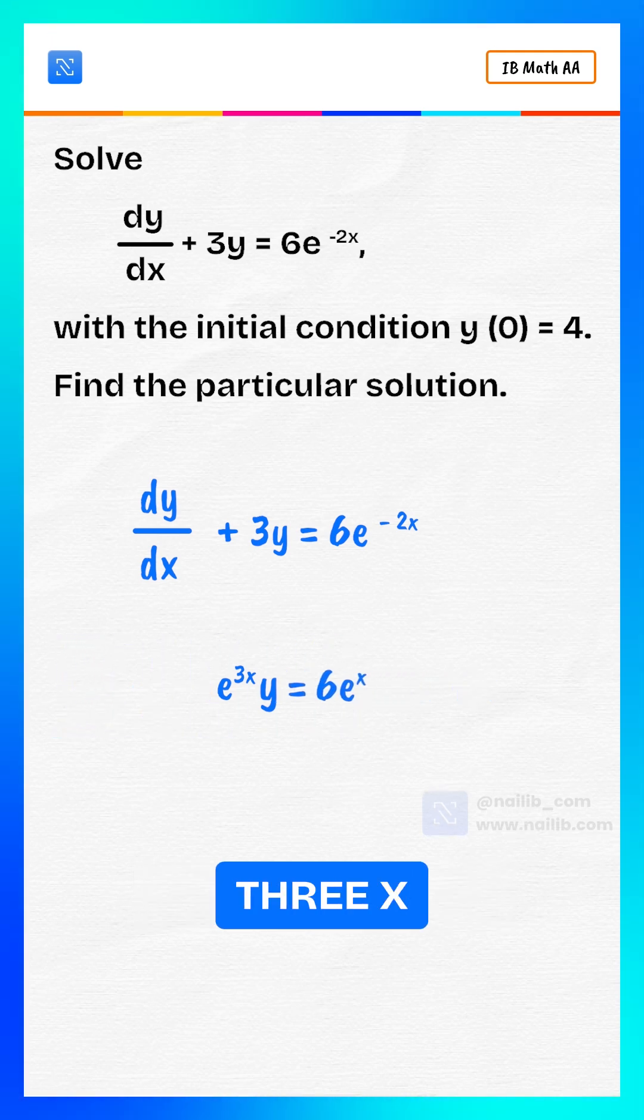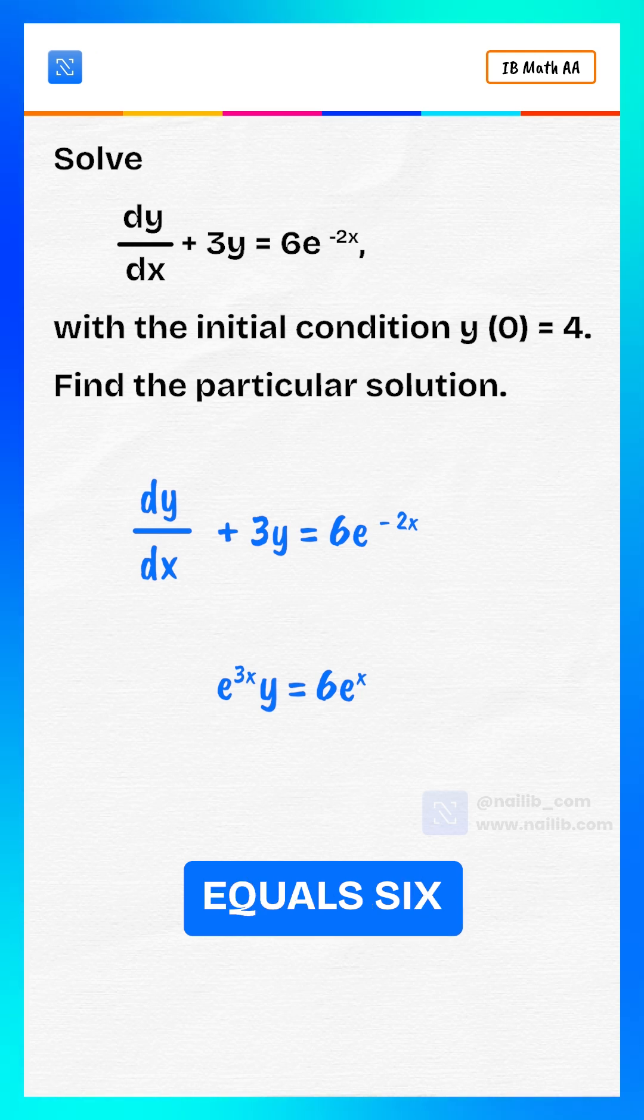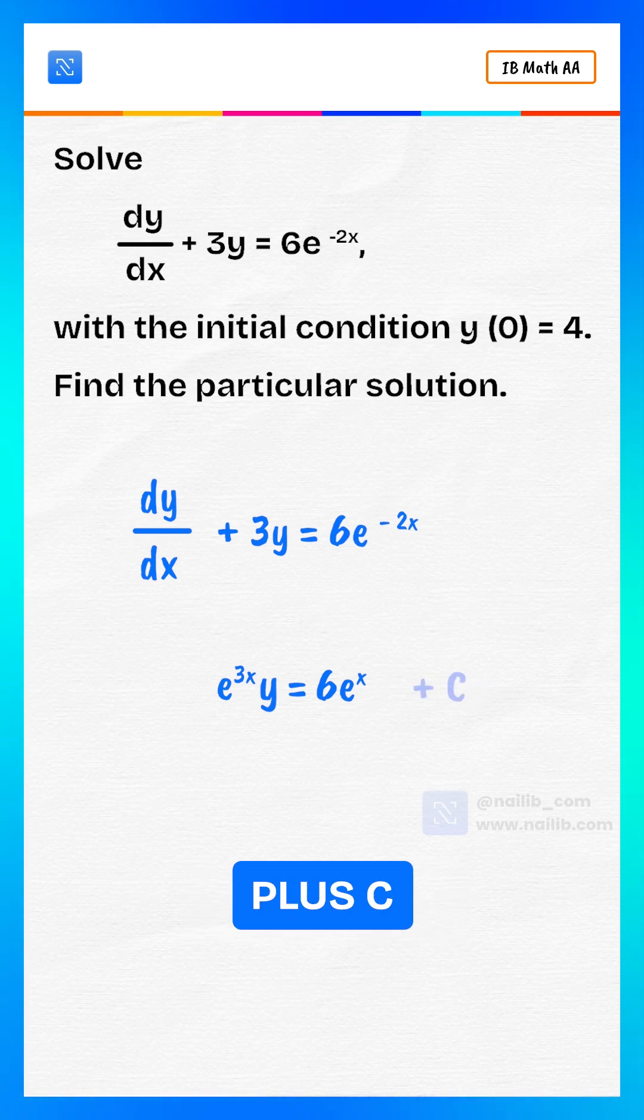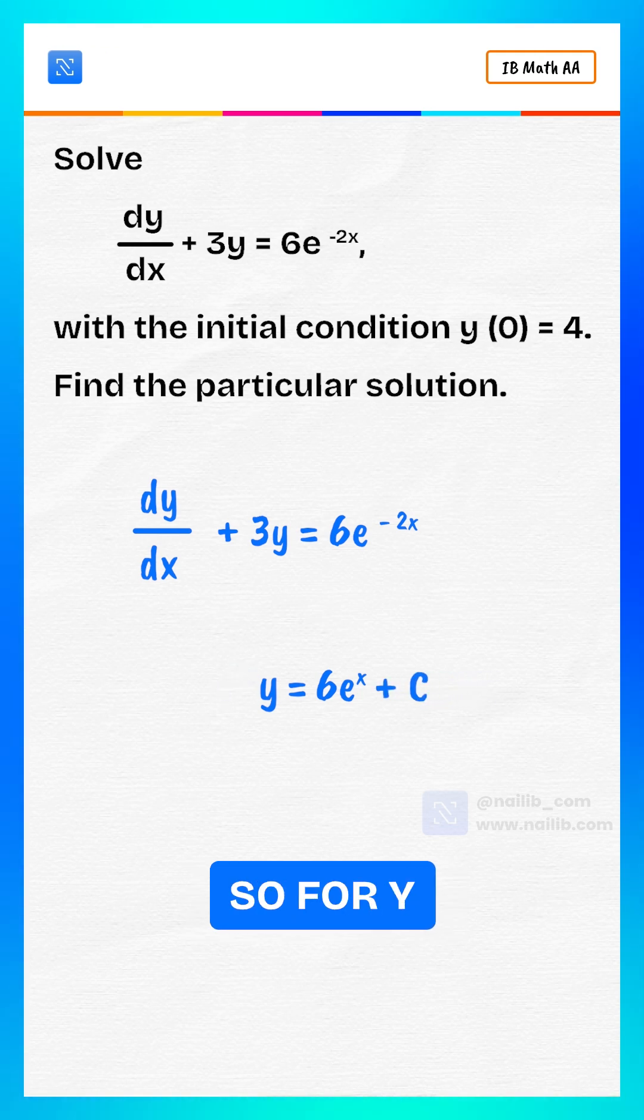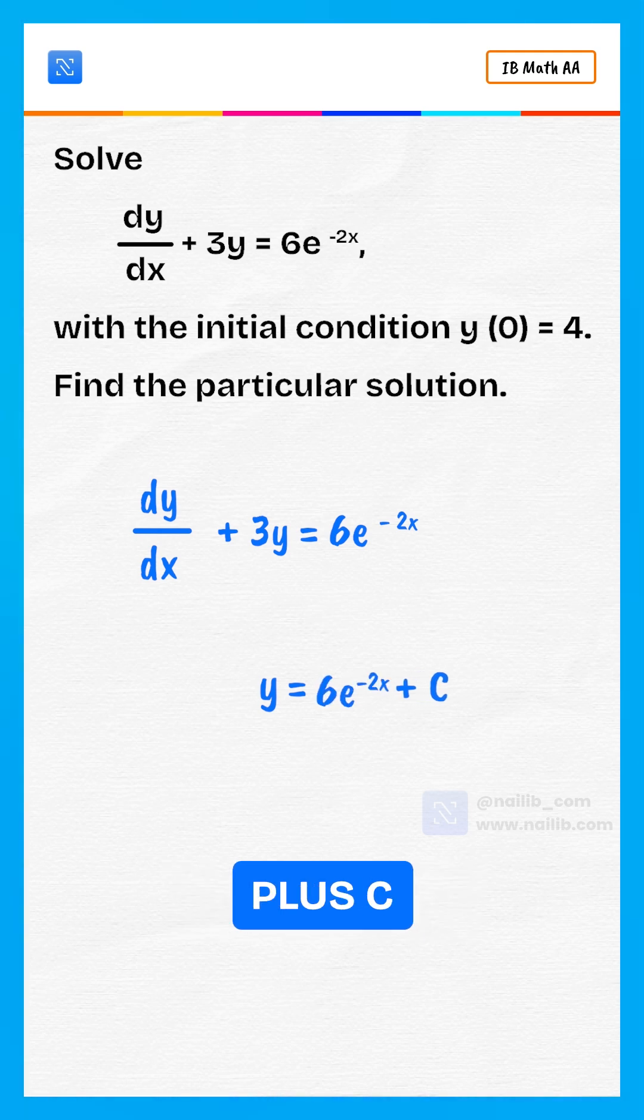We get e to the power 3x times y equals 6e to the power x plus c. Solve for y: y equals 6e to the power negative 2x plus c times e to the power negative 3x.